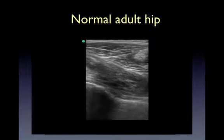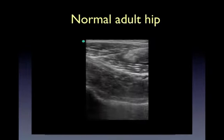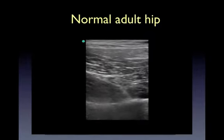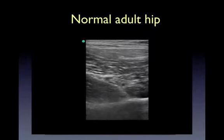In this clip, we see a normal adult hip. Note the absence of the growth plate.